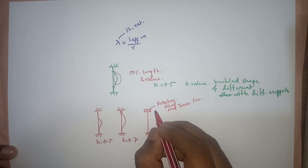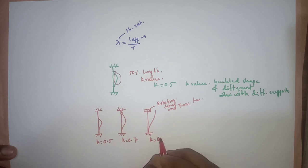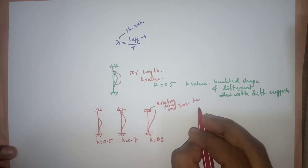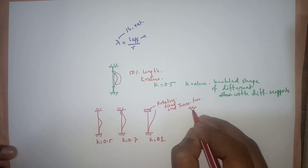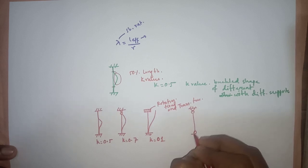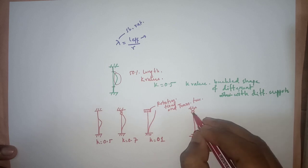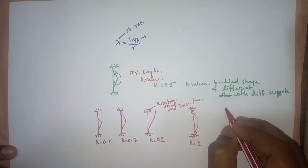For the rotation-fixed and translation-free case, the buckled shape will be something like that, representing k equal to 1. If both ends are pin-connected, the buckled shape will also give k equal to 1.